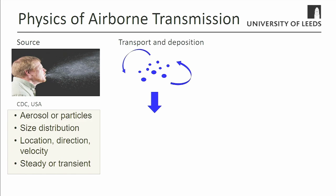Once released in the air, particles will be transported, and where they get transported depends on the local air flows in that environment. They might travel big distances — between rooms, around a whole building, or even between buildings. In fact, if they get released into the upper atmosphere, microorganisms can cross between continents. That's a whole different fascinating topic of its own.